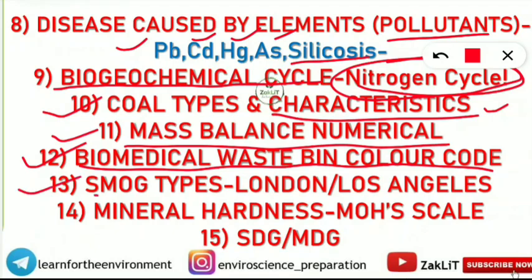The thirteenth topic is smog types. Smog is fog plus smoke. You should know London smog and Los Angeles smog — which is reducing in nature and which is not, when each was first observed, and which one came earlier. These distinctions are important.